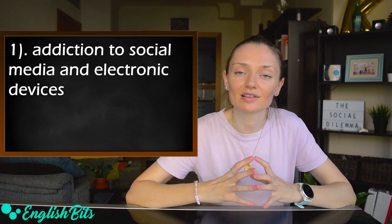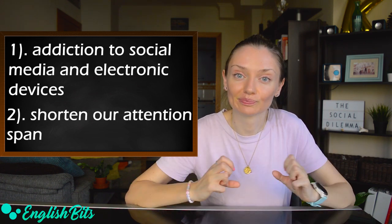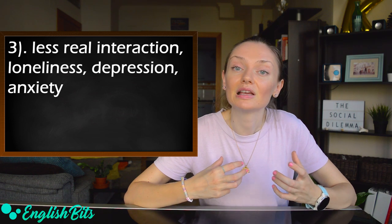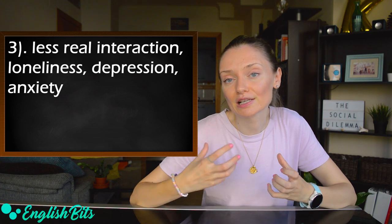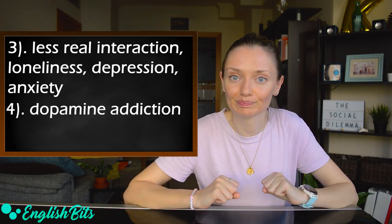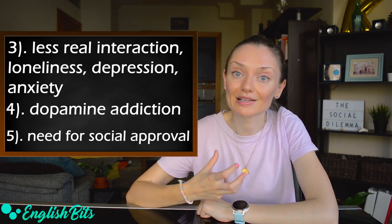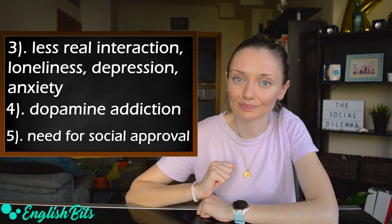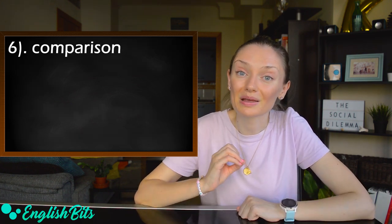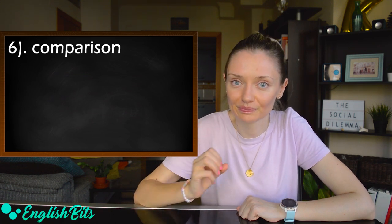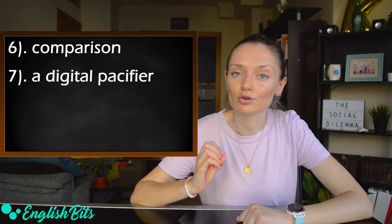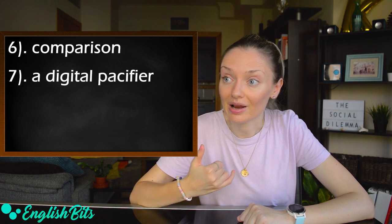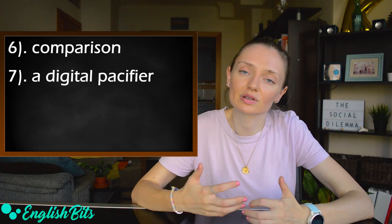The second disadvantage is that they shorten our attention span and increase distraction. They can also lead to less real interaction and more loneliness, depression, and anxiety, especially for teenagers. Another drawback is that likes release dopamine, which can create dopamine addiction. They also create the need for social approval and validation that can destroy your self-esteem, and take over kids' sense of worth and identity. Another downside is comparison — you end up comparing yourself to unrealistic standards of beauty. Social media are also like a digital pacifier: we turn to them when we feel bored, lonely, depressed, or sad, instead of learning how to deal with these emotions on our own.